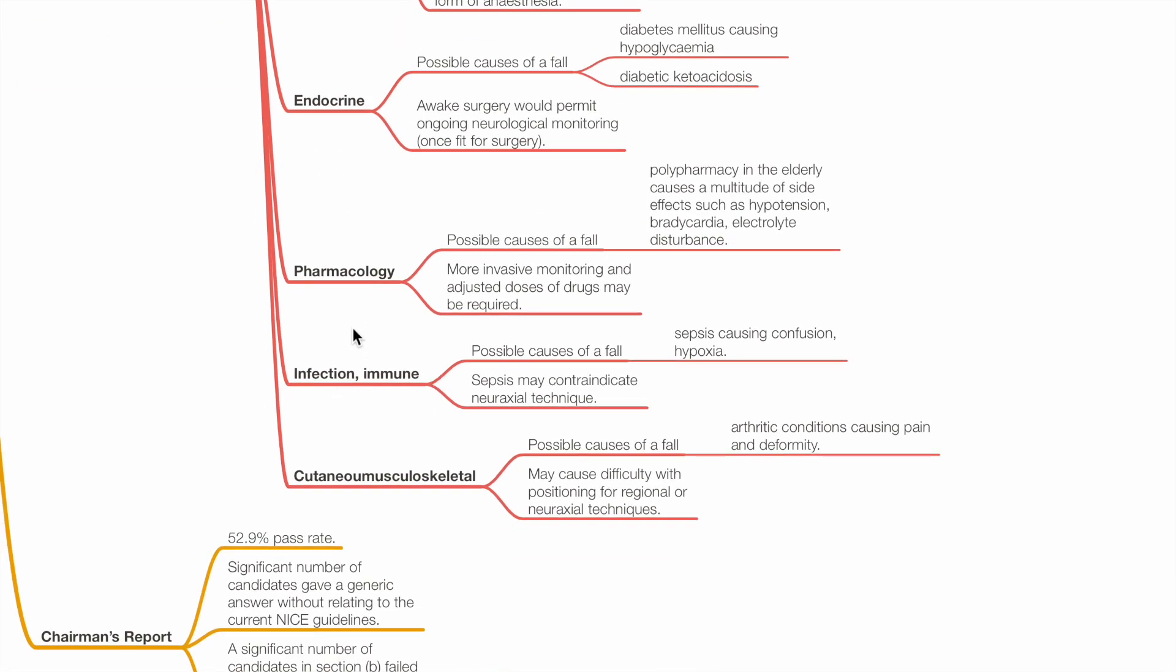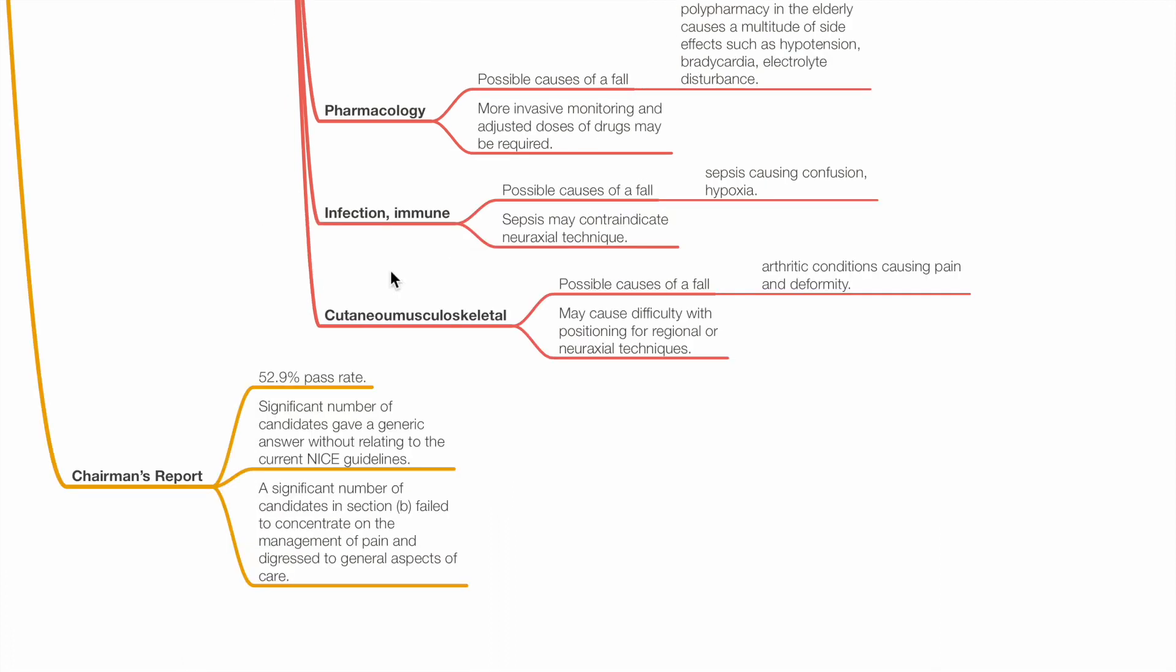Pharmacological causes of a fall includes polypharmacy, leading to hypotension, bradycardia and electrolyte imbalances. More invasive monitoring and adjusted drug doses may be required. Infective causes of a fall include sepsis, due to confusion and hypoxia. Sepsis may contraindicate neuraxial technique. Arthritic conditions can cause pain and deformity, which can lead to a fall. Arthritic conditions may cause difficulty with positioning for regional or neuraxial techniques.